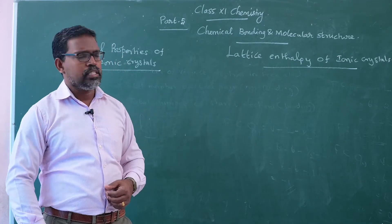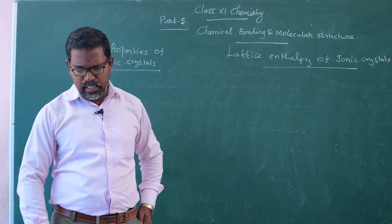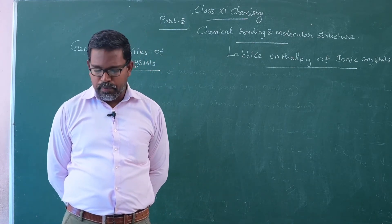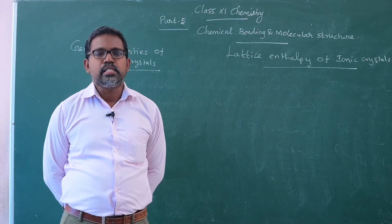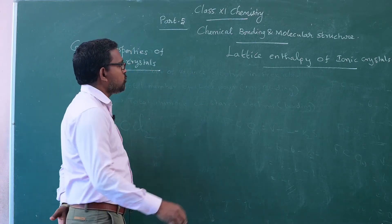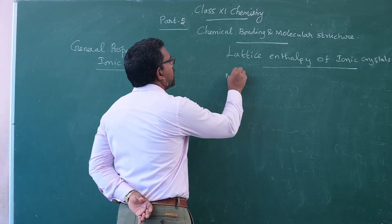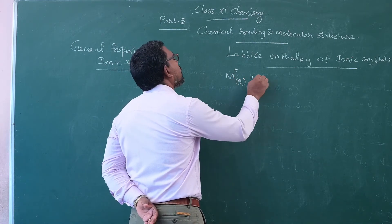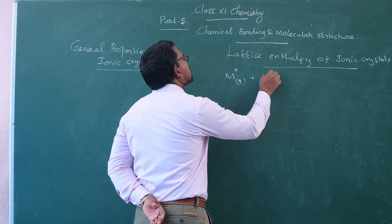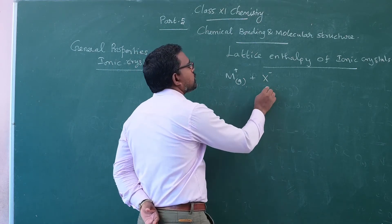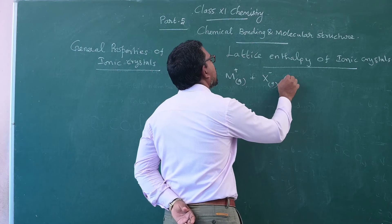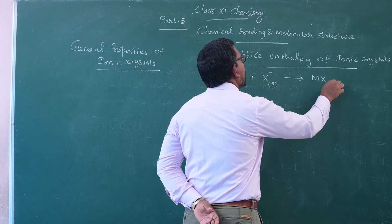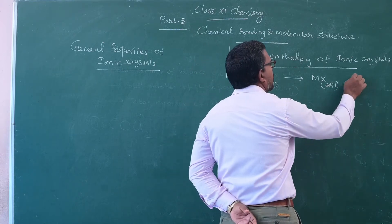What is lattice enthalpy? It is the amount of energy released when one mole of ionic crystal is formed from the constituent ions in their gaseous state. We know that M plus, the metal atom in ionic gaseous form, and X minus, the halogen atom in gaseous state, gives MX — a solid ionic crystal is formed.